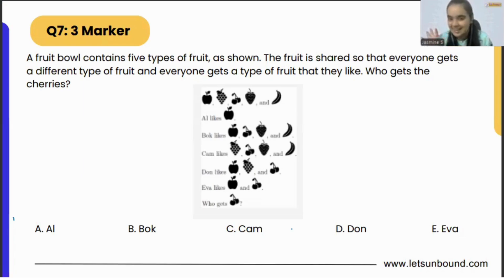The question is: The fruit is shared so that everyone gets a different type of fruit and everyone gets a type of fruit that they like. So who gets the cherries? This line is important - they get a different type of fruit and they will get a type of fruit that they like.